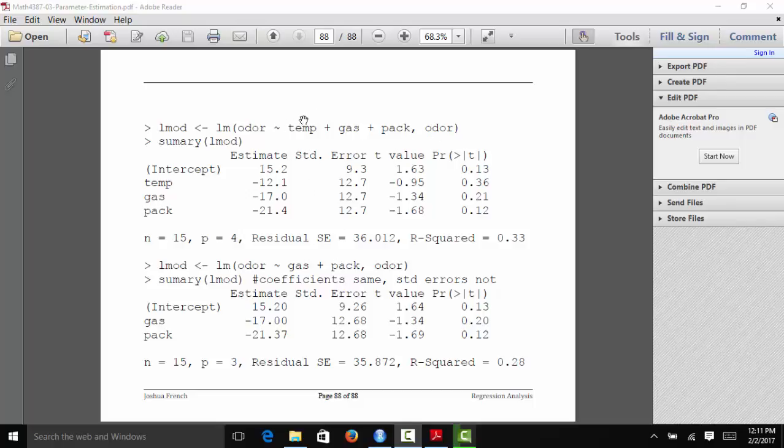you can see that our estimated regression coefficients are exactly what they were before, subject to rounding errors. This was negative 21.4, this is negative 21.37. That just has to do with how many decimal places are shown. In fact, these estimates are identical.